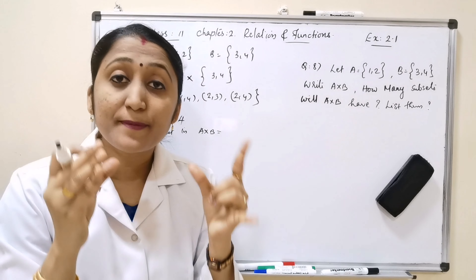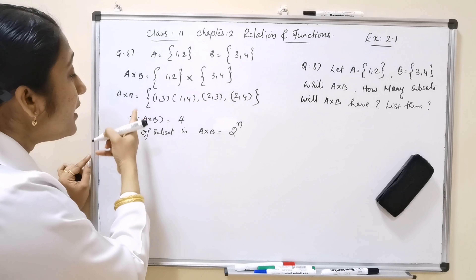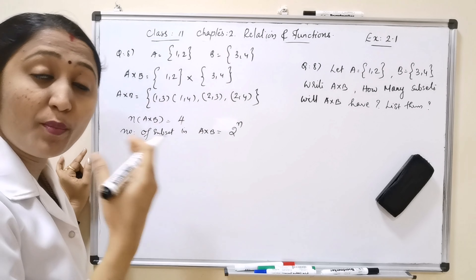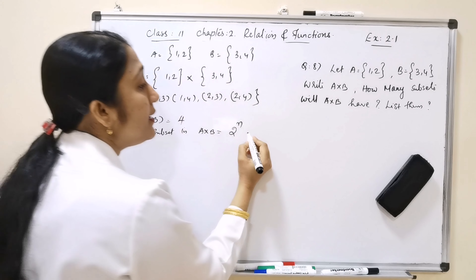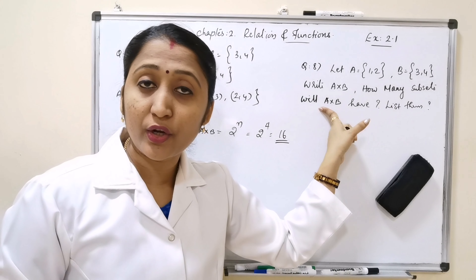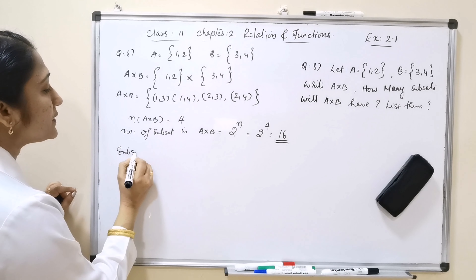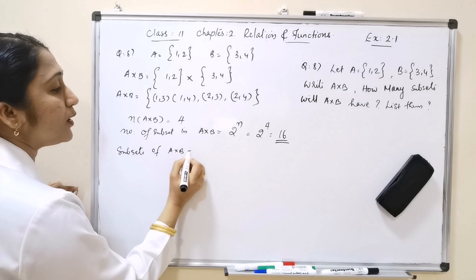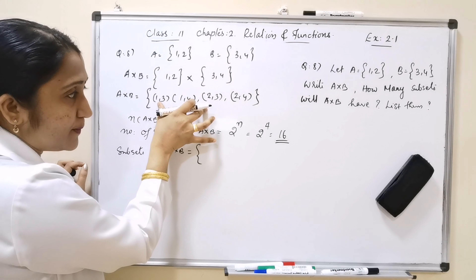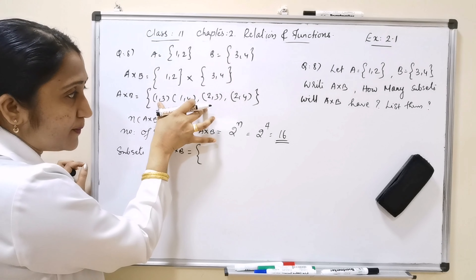How many subsets will A×B have? The number of elements in A×B is 4. The number of subsets of any set with N elements is 2^N. So the number of subsets of A×B = 2^4 = 16 subsets.